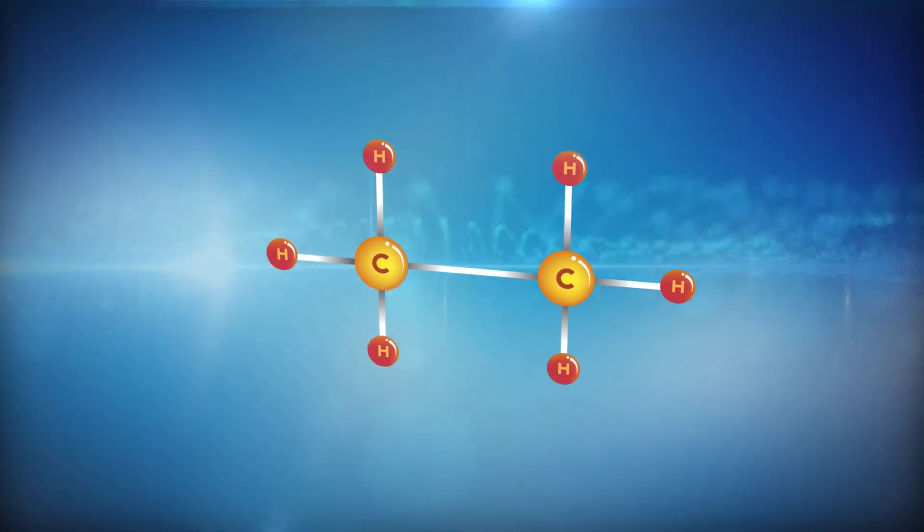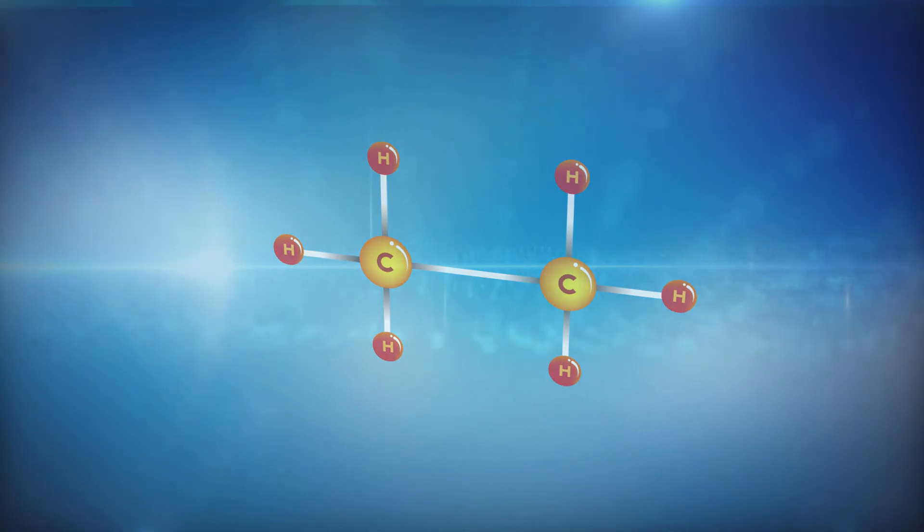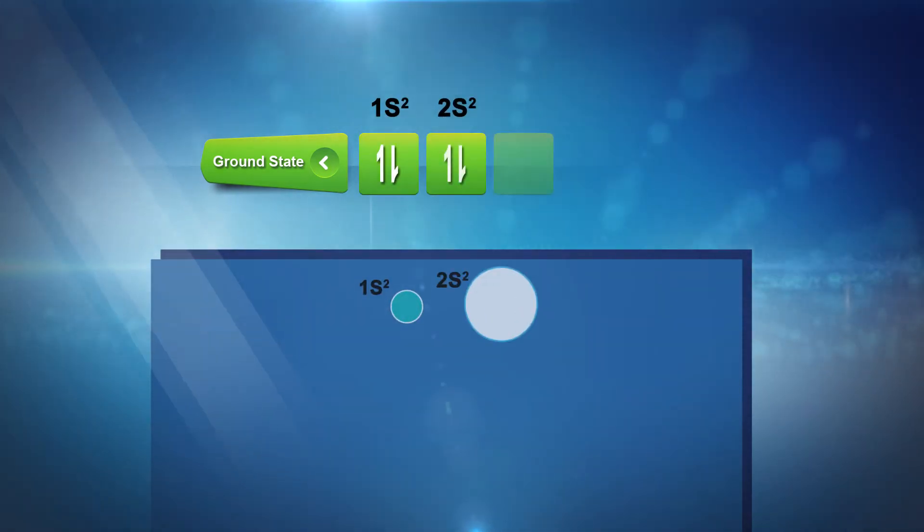Now consider only one carbon atom. The electronic configuration of this carbon atom in ground state will be 1s² 2s² 2px¹ 2py¹ and 2pz⁰.